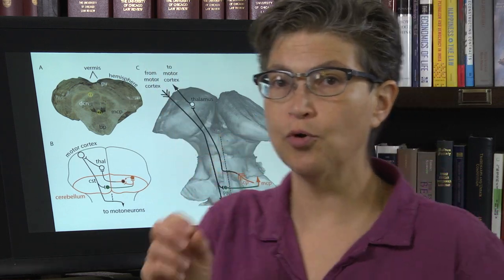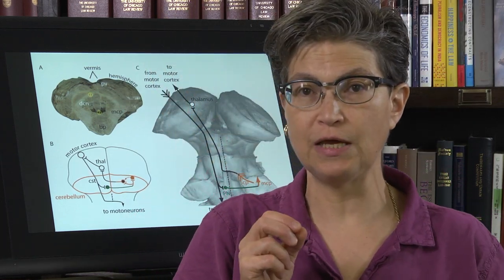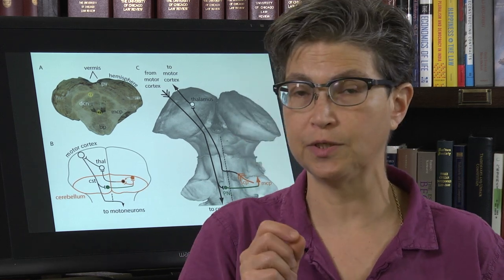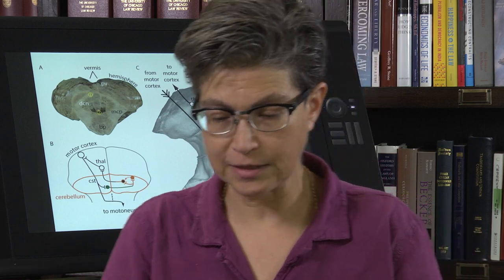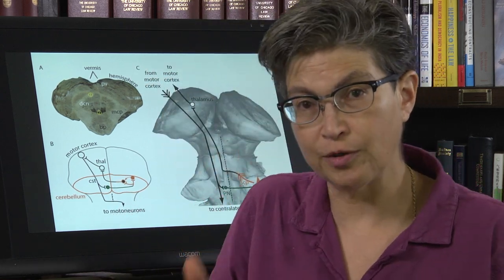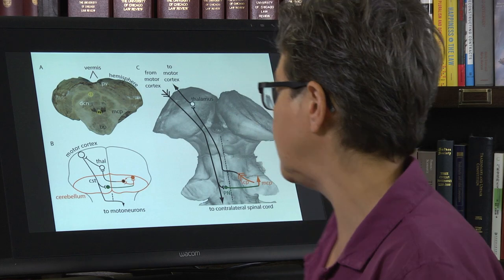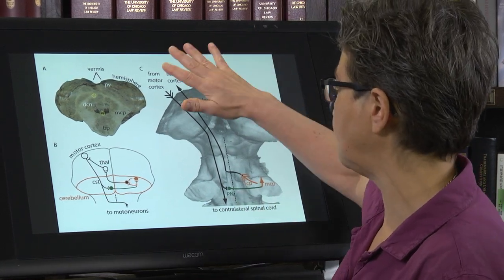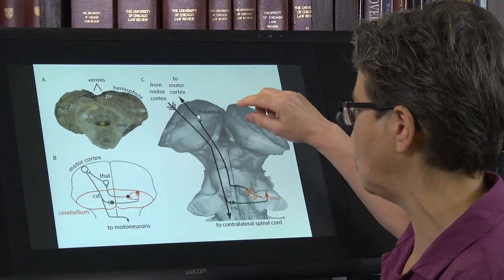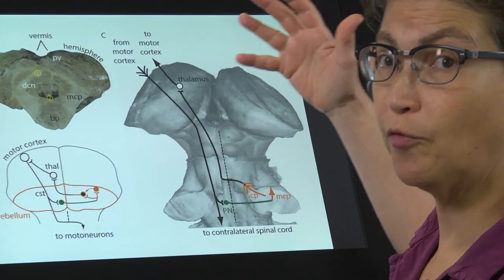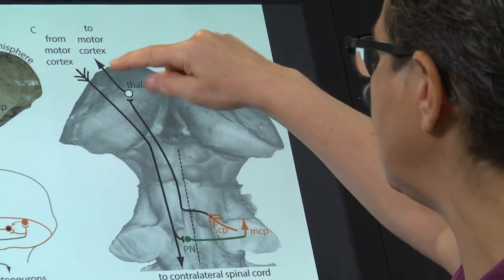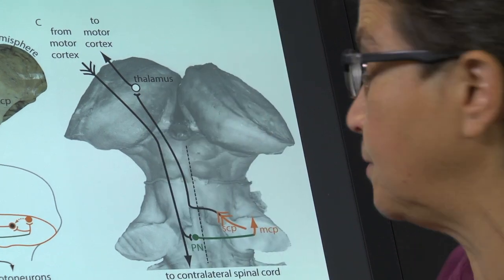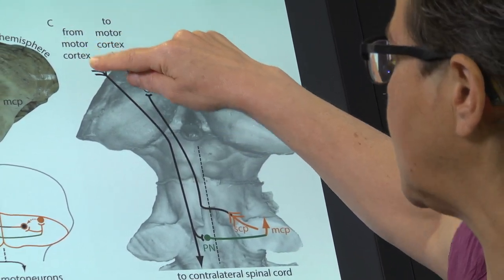One important thing to understand is: if there is a lesion in the cerebellum or in the peduncle, will that affect movement on the same side or the opposite side? The answer is the same side. I want to illustrate that by showing the basic pathway, which tells you that this is going to affect the same side.